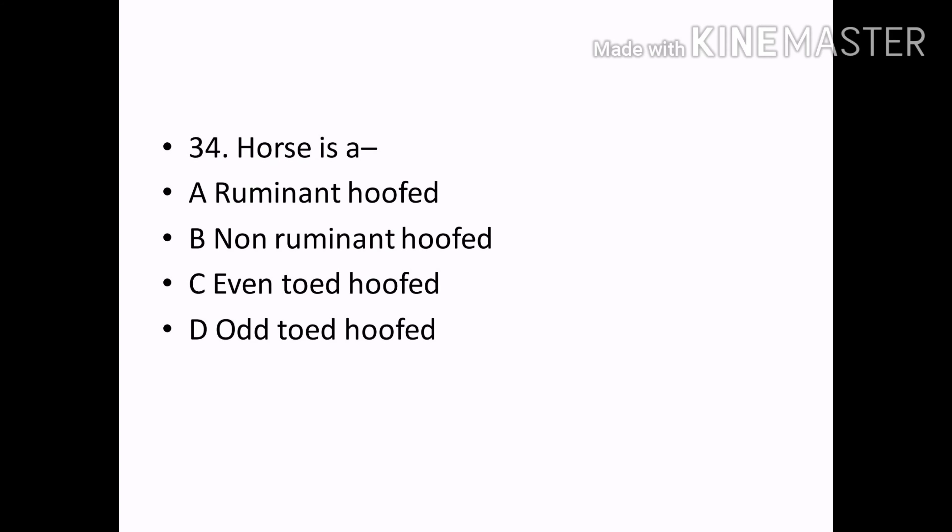Horse is a: Options — Ruminant hoofed, Non-ruminant hoofed, Even-toed hoofed, Odd-toed hoofed. Correct answer: Option B — Non-ruminant hoofed.